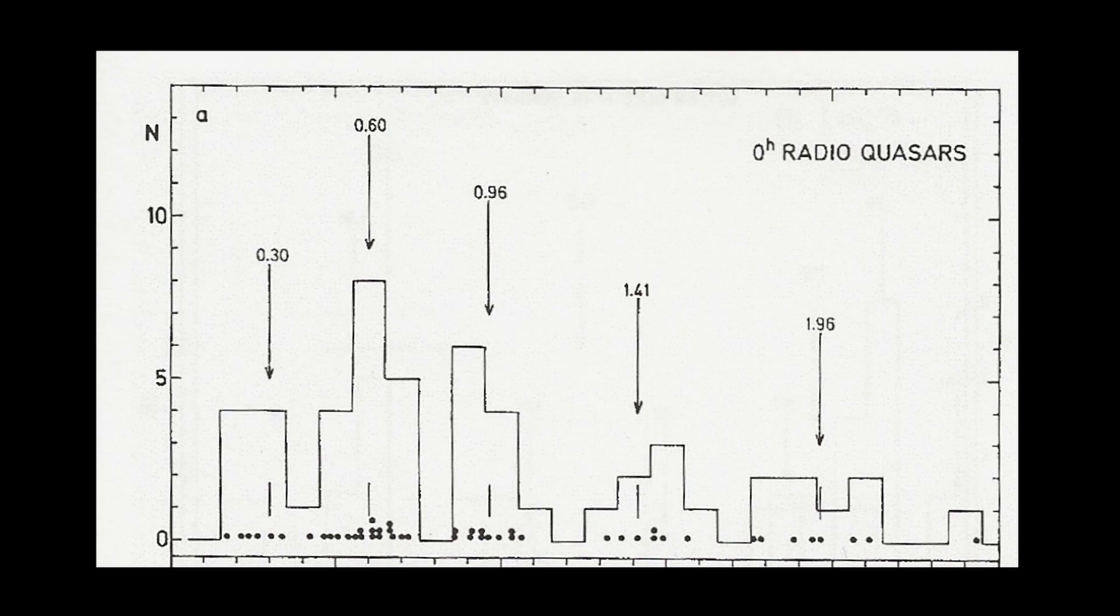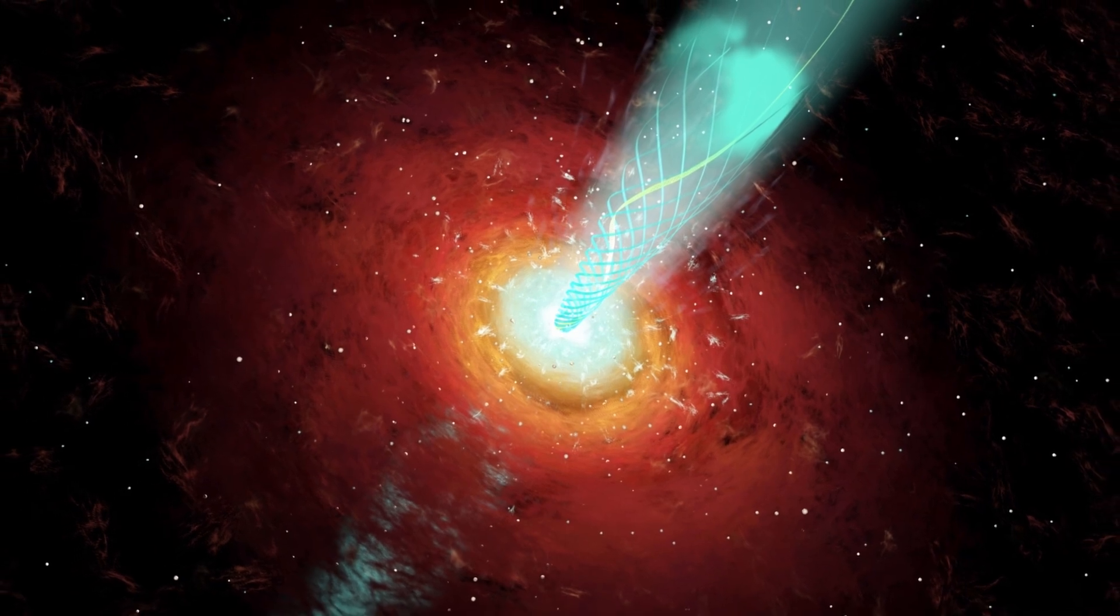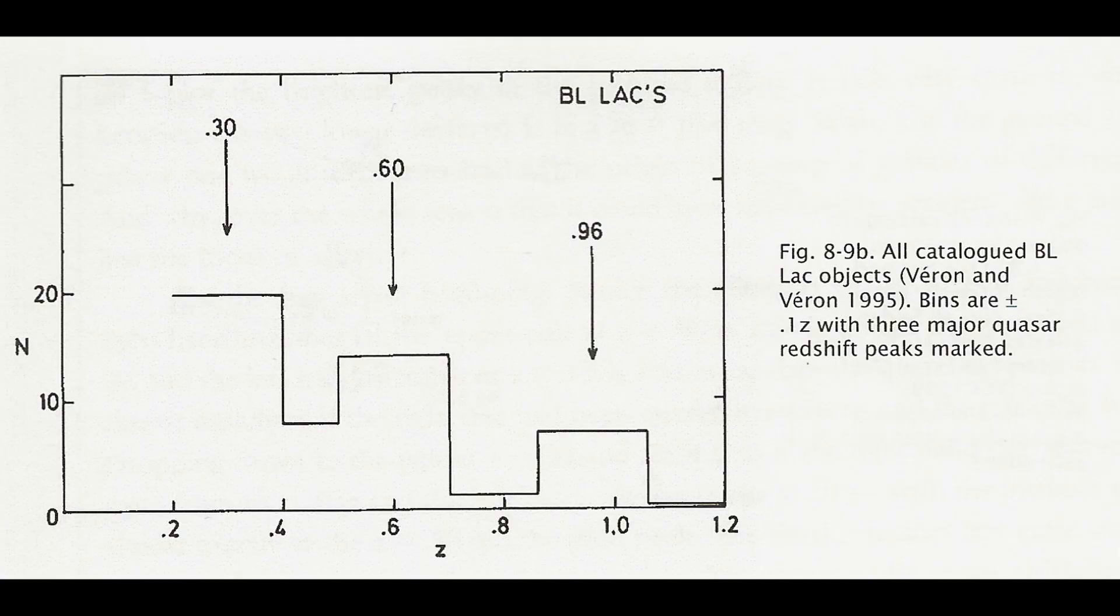If we examine BL Lac objects which we have discussed in previous videos, once the redshifts are plotted we once more see the same pattern of peaks at 0.3, 0.6 and 0.96. The peak at 0.6 is very important.